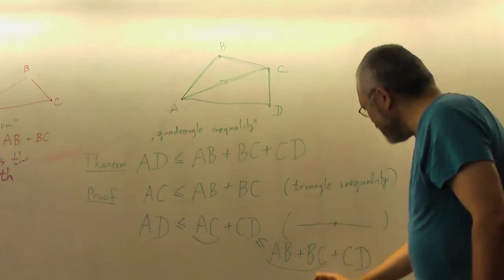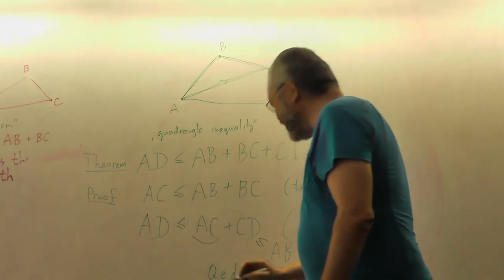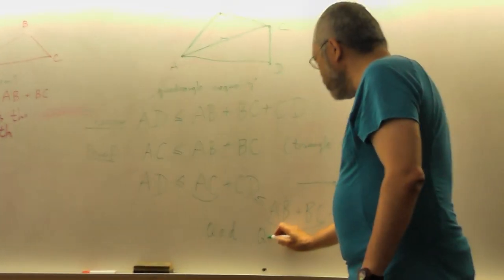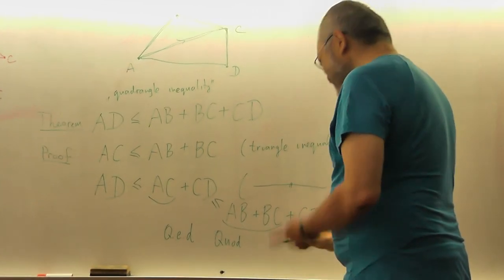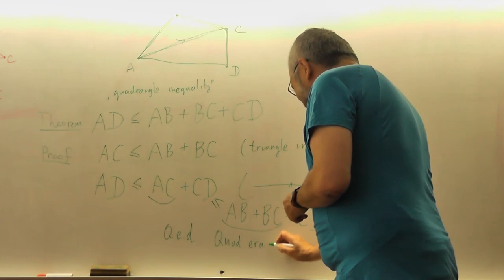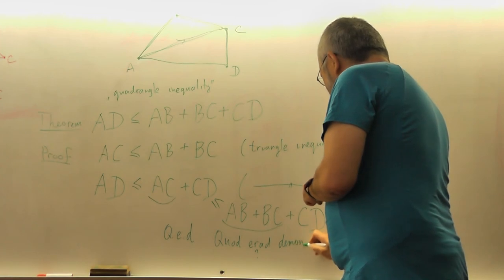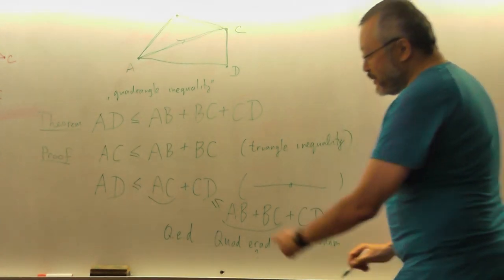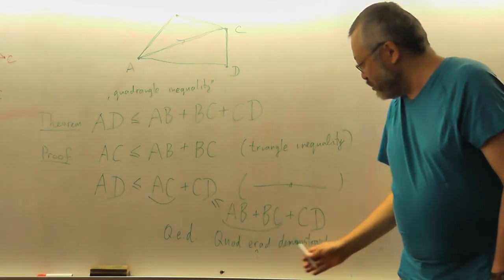Then mathematicians usually say, by tradition, QED. It's Latin words. But I am not sure I can even write them correctly. Quod erat demonstrandum, I think. So usually everybody knows that people write QED. But this means what we have to prove.